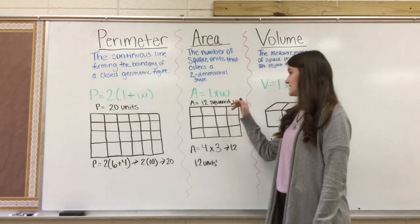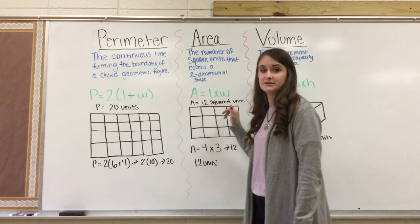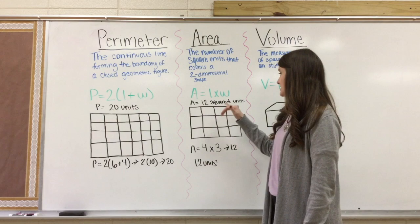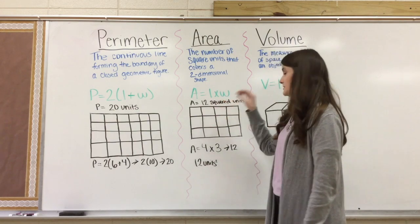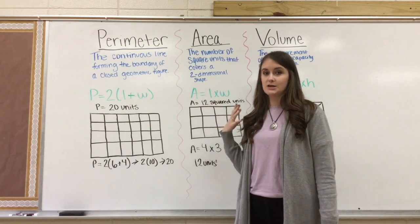Area has to have a squared unit. So in this case, it's 12 squared units. So it can be measured in inches. It would be 12 squared inches, 12 squared centimeters, 12 squared meters.